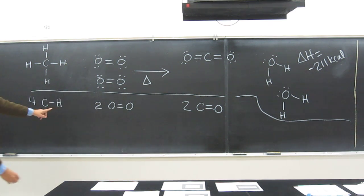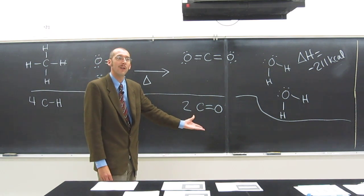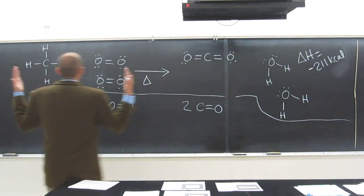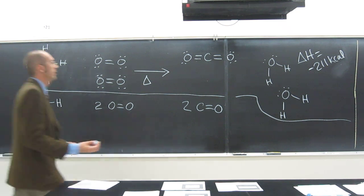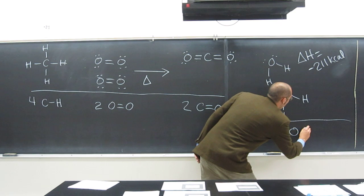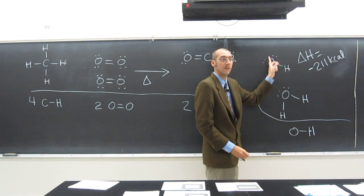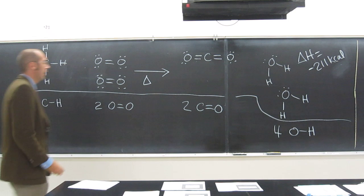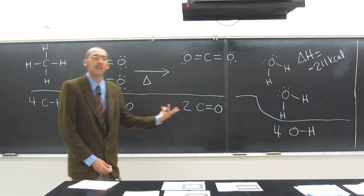Is everybody cool with that? Do we have any other bonds that were not present in the reactants that are present in the products? Yeah, OH bonds. How many of those do we have? Four. One, two, three, four, because we got two oxygens, so remember that. Did we have any OH bonds at the beginning in the reactants? No. So those must have been formed too.